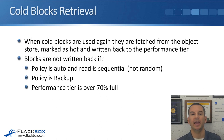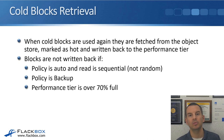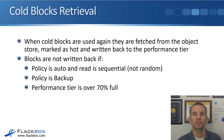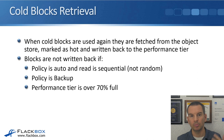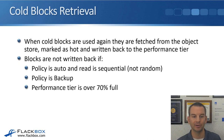When blocks have been tiered off to object storage and a client needs to retrieve them, the data must be fetched from the object store. When that happens, the data is marked as hot again because it has been frequently accessed, and it is copied back onto the performance tier.